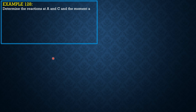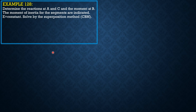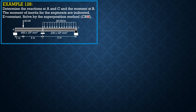The method of superposition is also known as the method of consistent deformation. The principles are applied in Example 126: determine the reactions at A and C and the moment at B. The moment of inertia for the segments are indicated and E is constant. We will solve by the superposition method. This beam is indeterminate to the first degree, so we remove one of the supports so that the beam becomes simply supported.